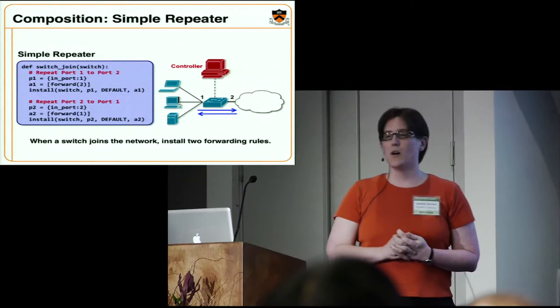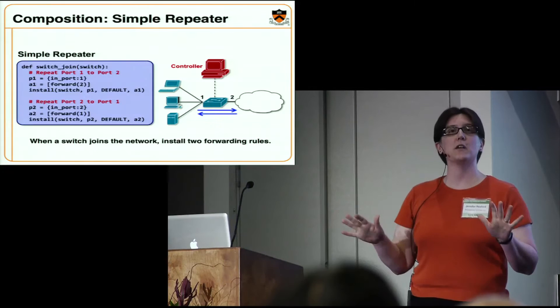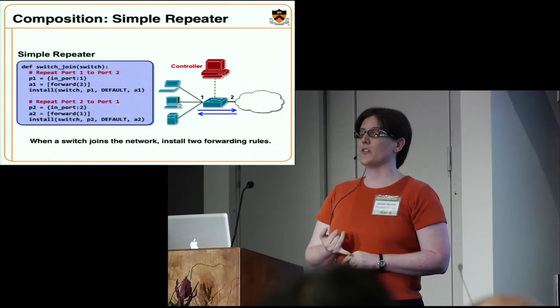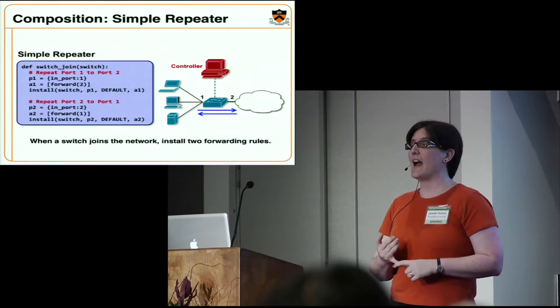The second example illustrates why composition is difficult on top of the low-level APIs we have today. Imagine you want a system that does a simple repeater — the most basic routing function — and monitoring of web traffic. Here's an example of a repeater: when a switch joins the network, an event handler gets invoked in your favorite controller — NOX, Beacon, etc. — and it installs two rules: one that forwards packets from input port one to output port two, and another that does the reverse. The patterns packets match on are just input port, the action is to forward out the other interface, and those two rules are installed directly in the switch.